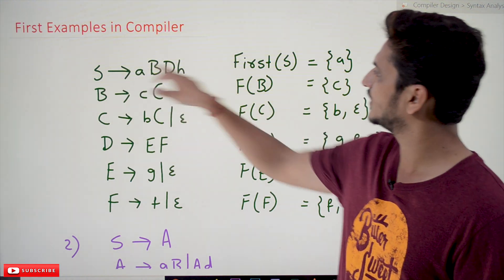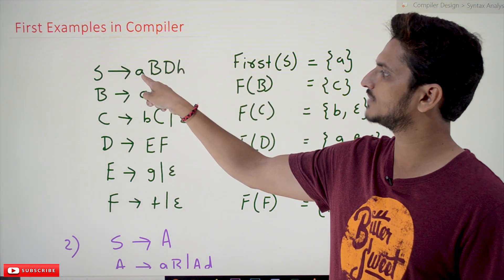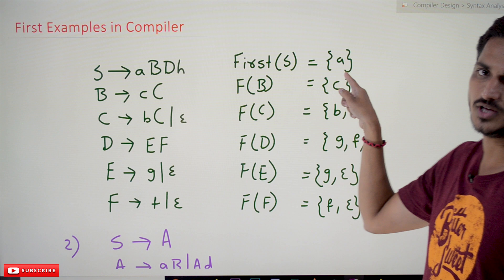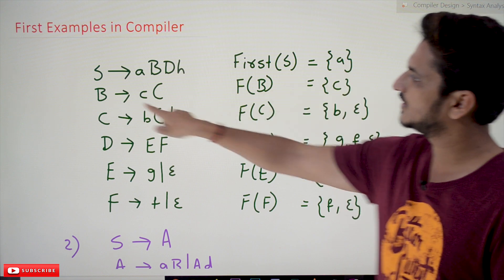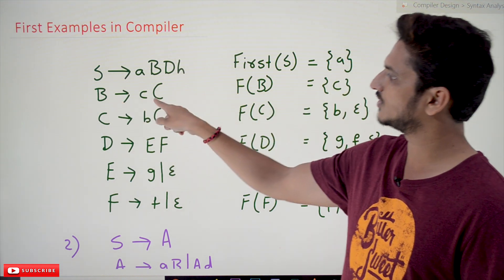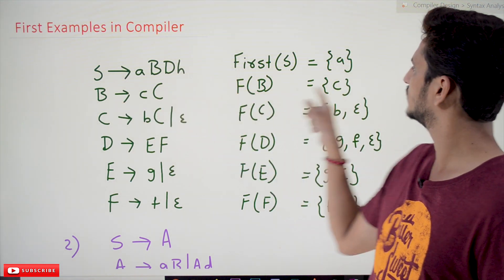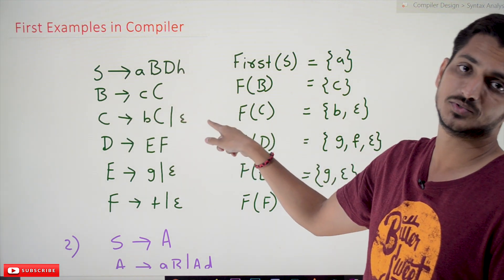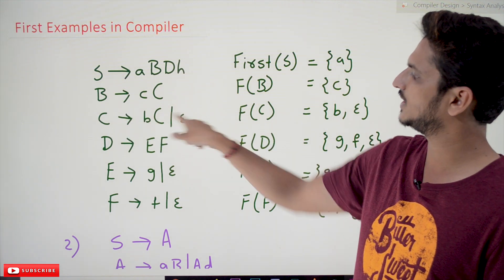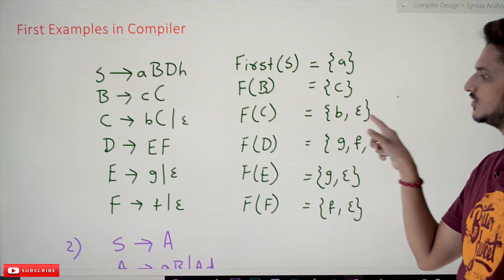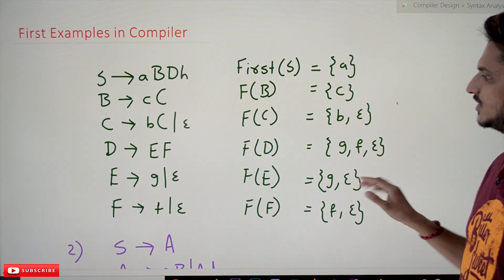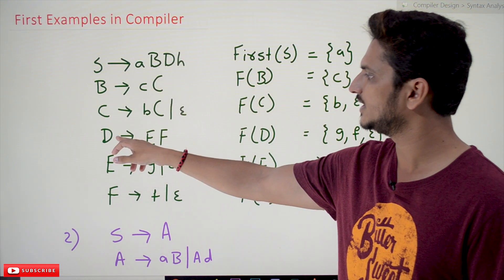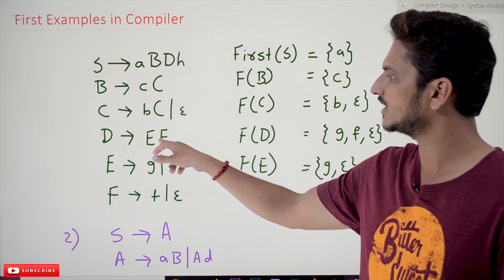In order to identify the FIRST of S: the first terminal symbol encountered is 'a', so FIRST(S) = {a}. Similarly, FIRST(B) — the first terminal is 'c', so FIRST(B) = {c}. FIRST(C) = {b, epsilon}, since you can take 'b' or epsilon.